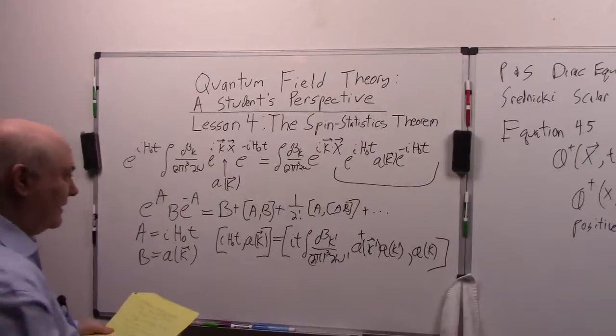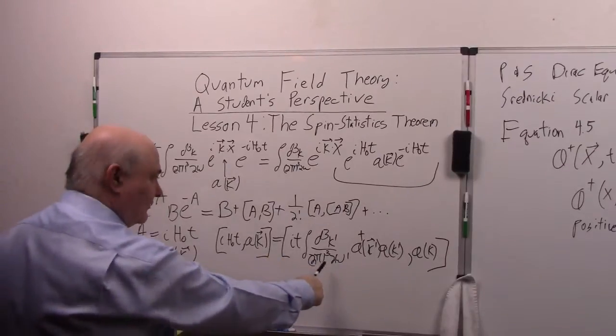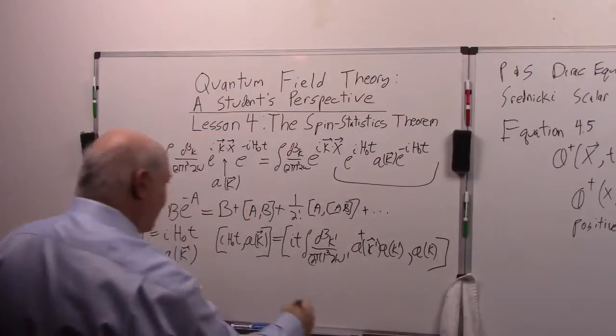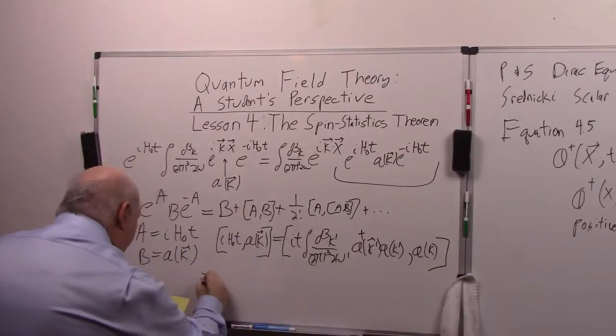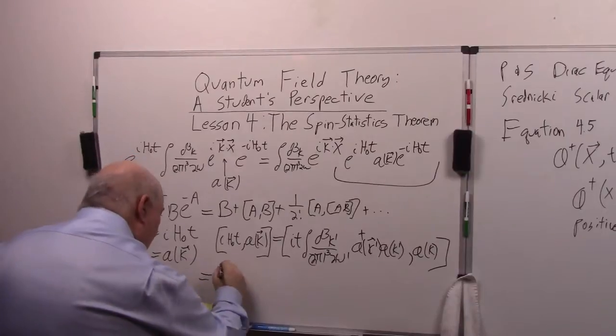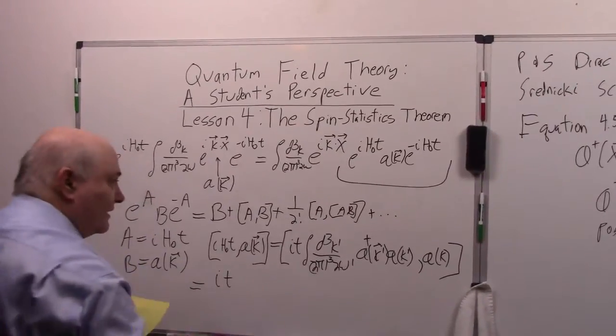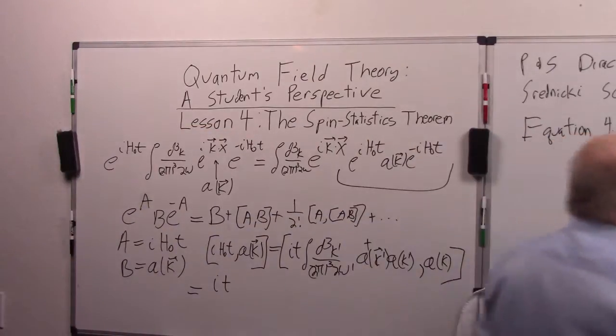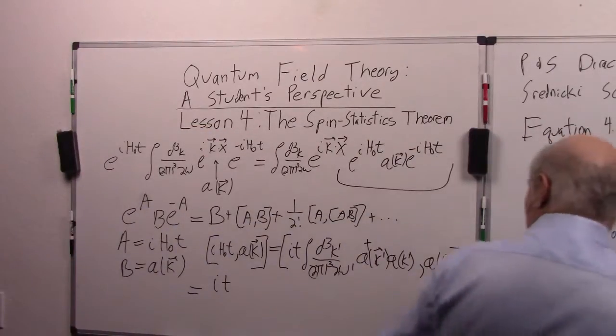So we can take the numbers and the integral outside of the commutator and it's just this thing over here. So this is equal to IH∂T, I left out an omega on that Hamiltonian. Yeah, it's over there, it's omega. Should be an omega prime here.